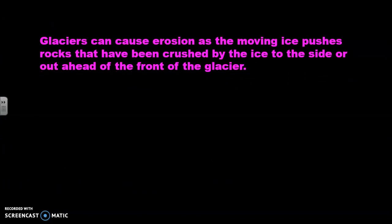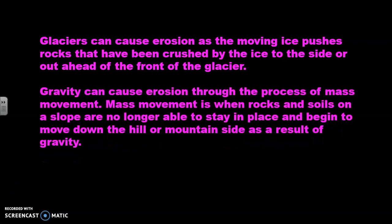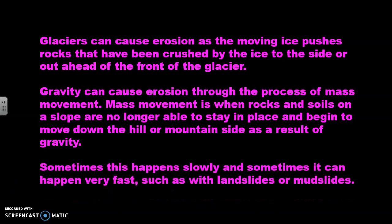Glaciers can cause erosion as the moving ice pushes rocks that have been crushed by the ice to the side or out ahead of the front of the glacier. Gravity can cause erosion through the process of mass movement. Mass movement is when rocks and soils on a slope are no longer able to stay in place and begin to move down the hill or mountainside as a result of gravity. Sometimes this happens slowly and sometimes it can happen very fast, such as with landslides or mudslides.